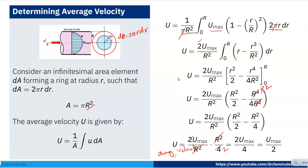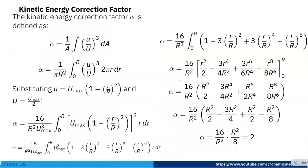So the average velocity U = u_max / 2. Now for the kinetic energy correction factor: alpha is defined as α = (1/A) ∫ (u/U)³ dA, where u is the velocity at any radial position r and U is the average velocity.